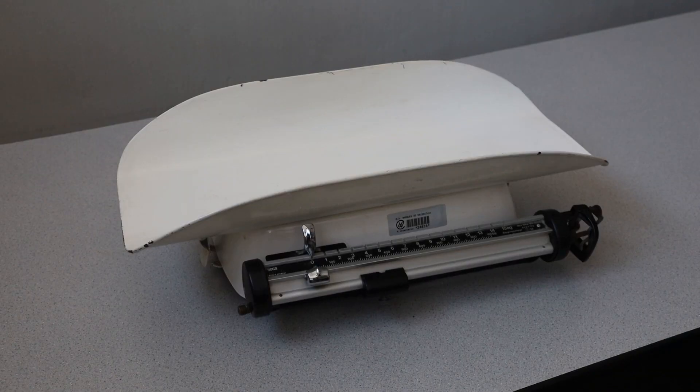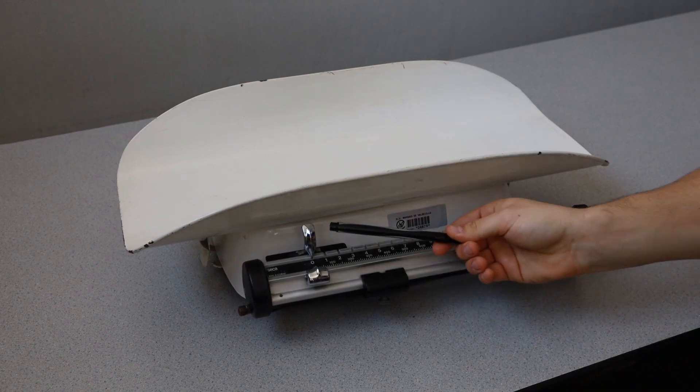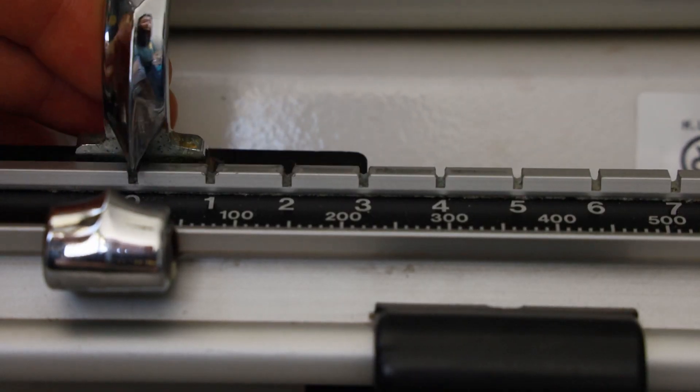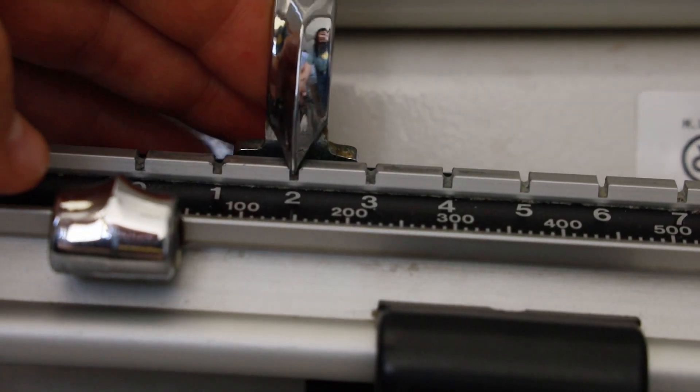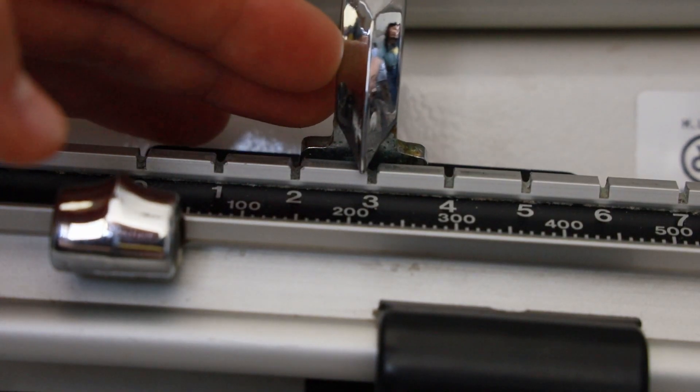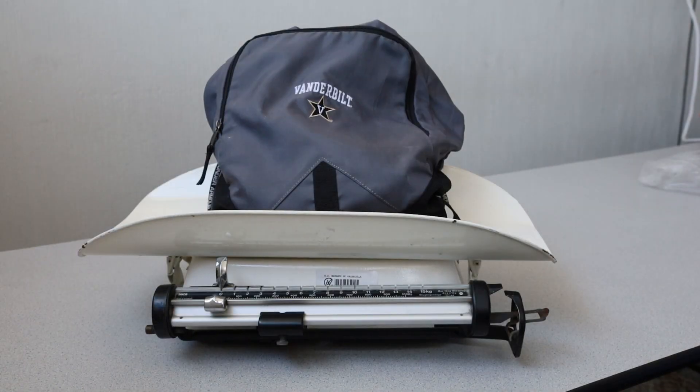We will now demonstrate how to properly determine the weight of an unknown object. To perform a weighing procedure, two weights are used to level the beam balance: the small weight and the large weight. The large weight can be slid across the metal railing and held in place at discrete locations along the rail by slots in the railing.